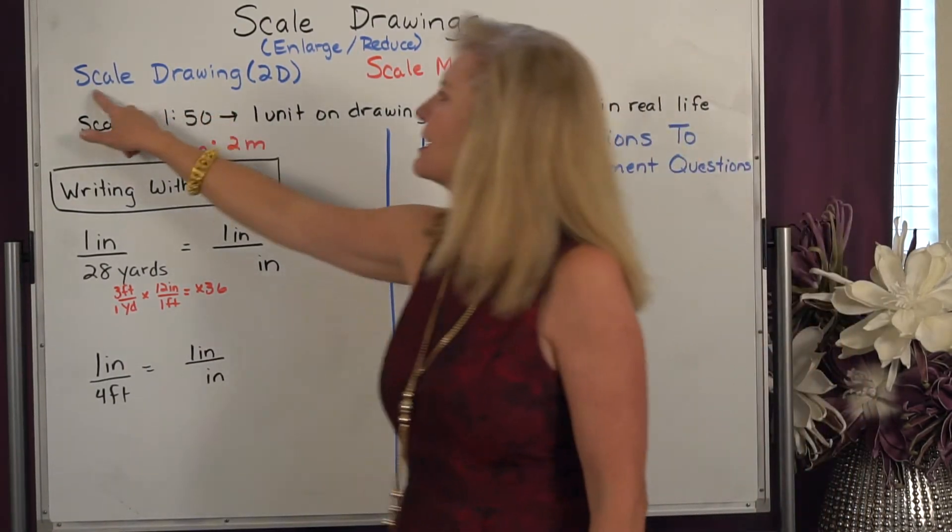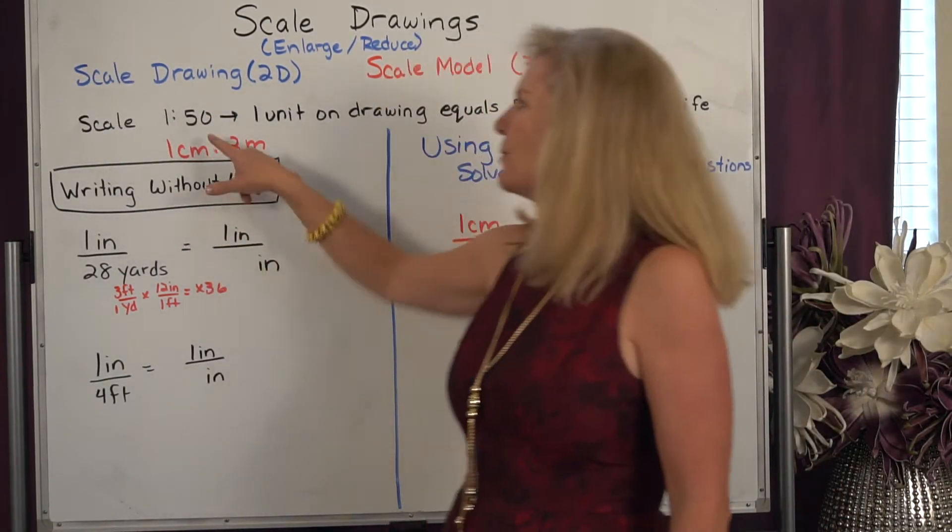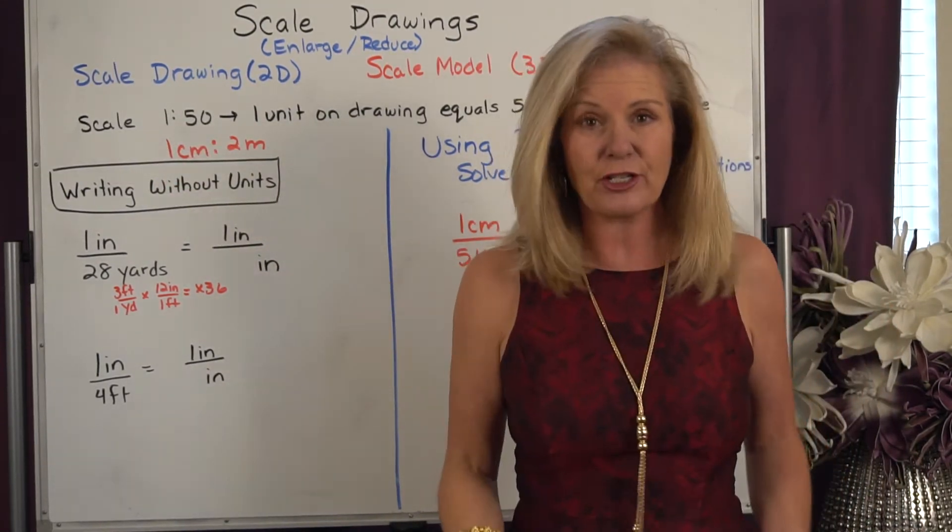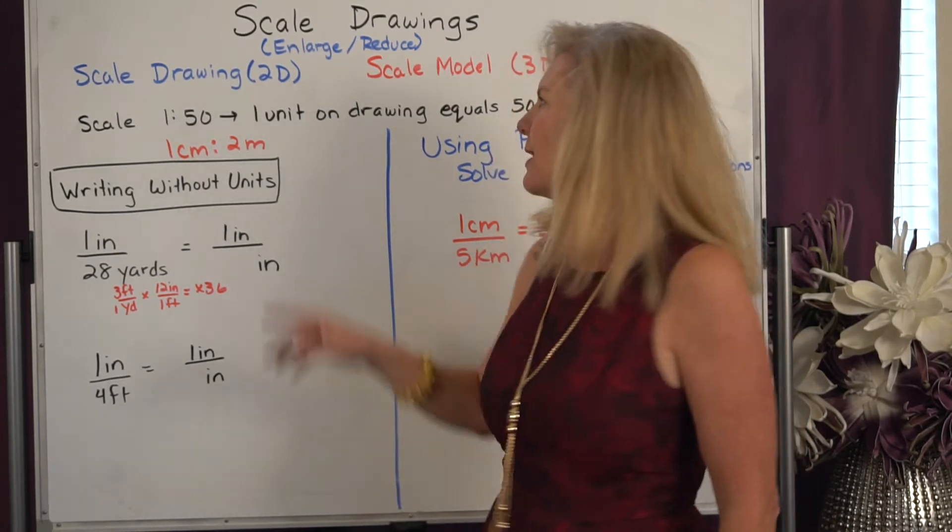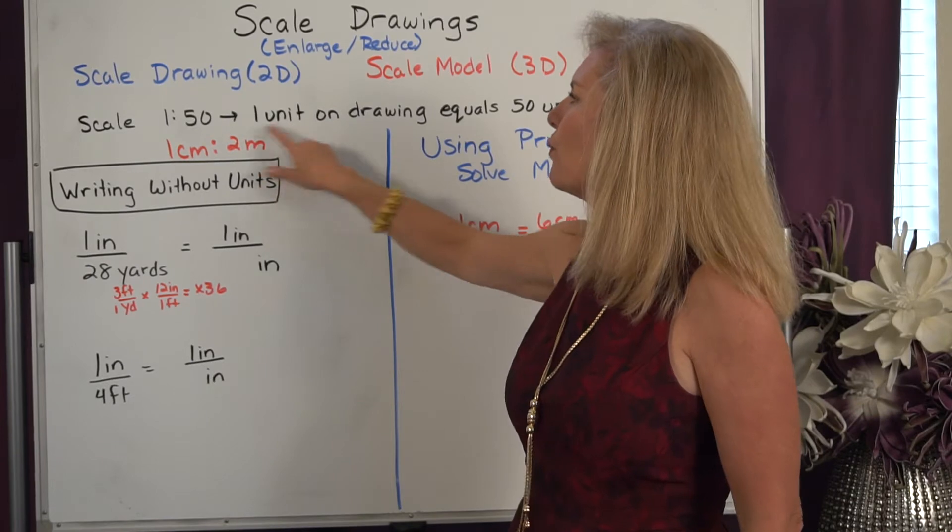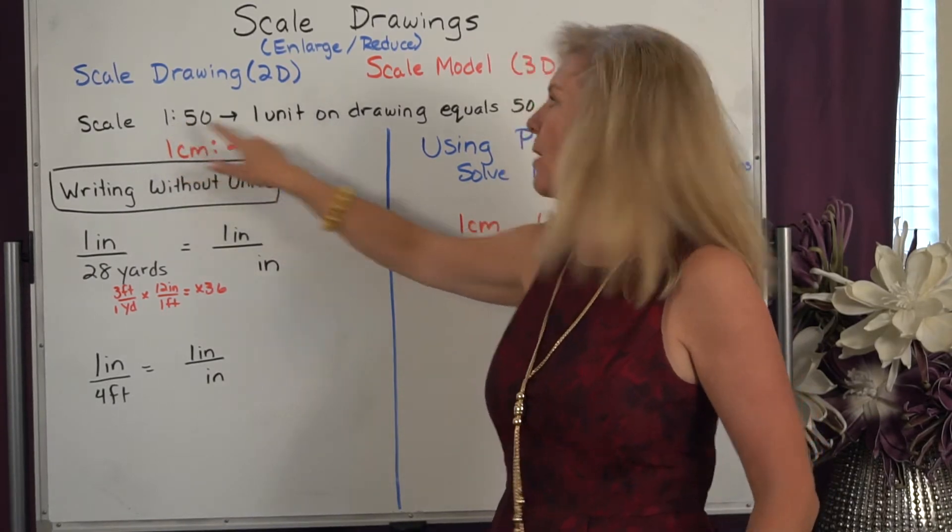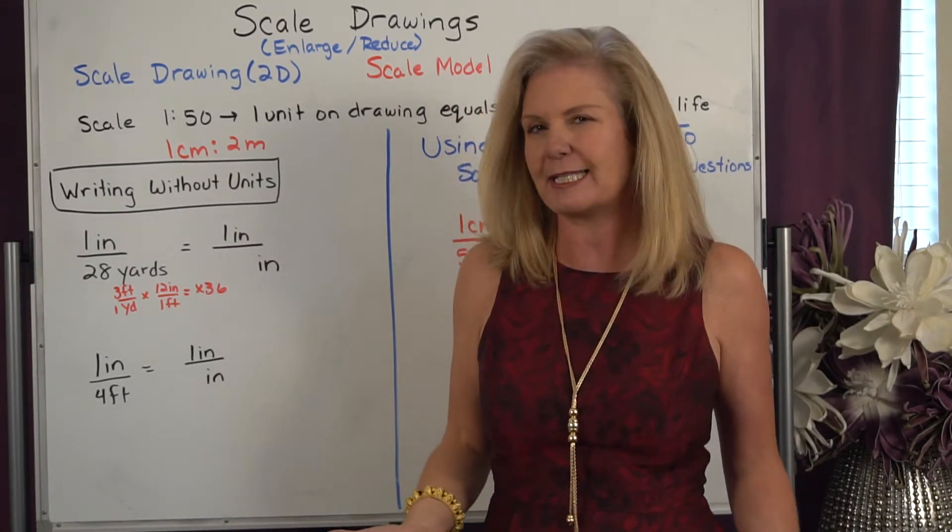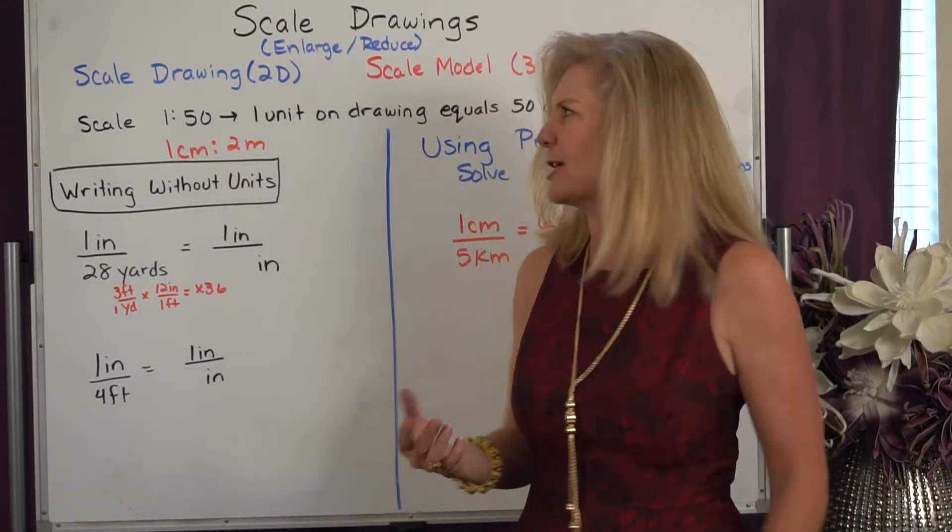Now what's important here is the word scale. When we take a look at a scale, if we had a scale of 1 to 50 that's a ratio, a comparison of two things. Because there's no units of measure with that, one unit on the drawing has to equal 50 units in real life and I can just say units if they haven't given me an exact measurement.